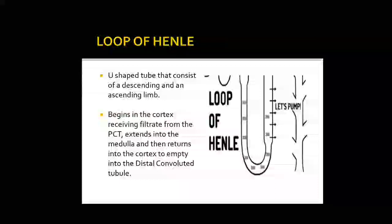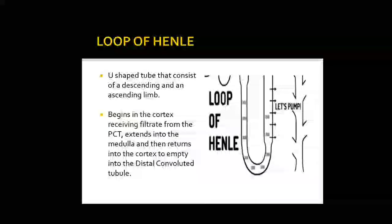The next part is the U-shaped loop of Henle. It consists of a descending and an ascending limb. The descending limb brings the filtrate down into the medulla, and the ascending limb takes it back to the cortex. It begins in the cortex receiving filtrate from the PCT, extends into the medulla, and then returns into the cortex to empty into the distal convoluted tubule.